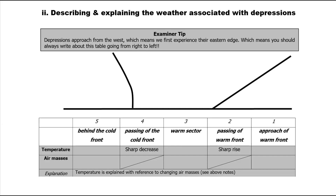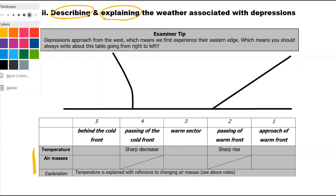Now it's time to take a more detailed look at the weather you get as the depression passes over. Notice we need to describe the weather — what's happening — and also explain the weather — why it's happening. You'll see at the side I've put the first couple in for temperature and air masses, with the explanation contained in there as well. Before we fill any of that in, I want to fill in some annotation onto the diagram.